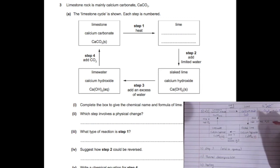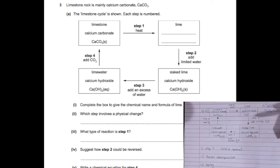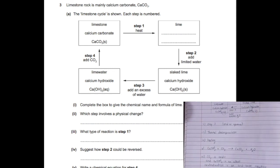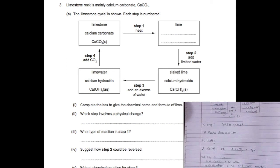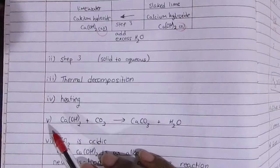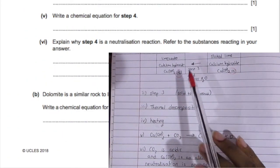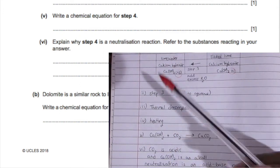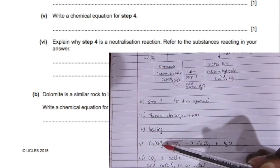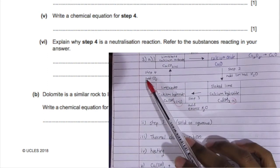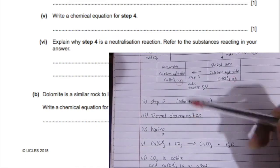Write a chemical equation for step four. Calcium hydroxide, an aqueous solution of calcium hydroxide plus carbon dioxide should give us calcium carbonate. And what about the two hydrogens and oxygen? That is water, which is H2O. Make sure everything's balanced out.